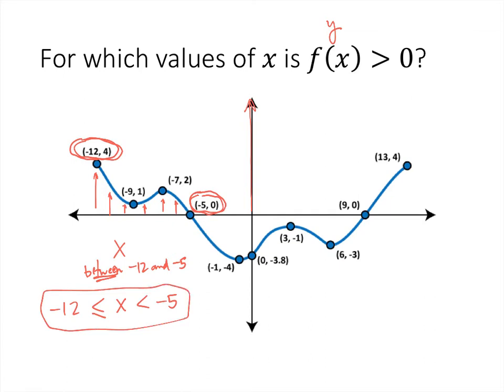But if we notice, we look over here to the right, my function, the y value becomes positive again for all values of x between 9 and 13. And again, we want to include 13 because that y value is positive. We don't want to include 9 because that y value is 0 and 0 is not positive. So I'd get two inequalities for my solution here. Negative 12 less than or equal to x less than negative 5 and 9 less than x less than or equal to 13.